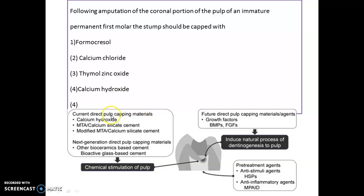Let's review the different types of pulp capping agents. Currently we have calcium hydroxide, considered the gold standard. We also have MTA or calcium silicate cement, and modified MTA. Then we have next-generation direct pulp capping materials like bioceramic-based agents. These agents help in chemical stimulation of the pulp via high pH, irritating the area and helping in the formation of a calcific barrier.